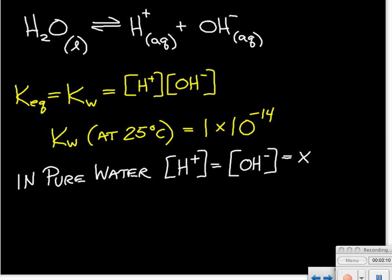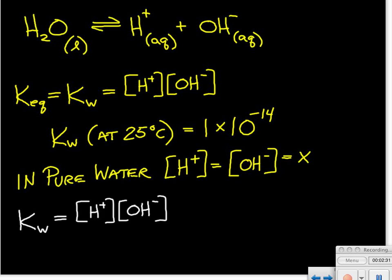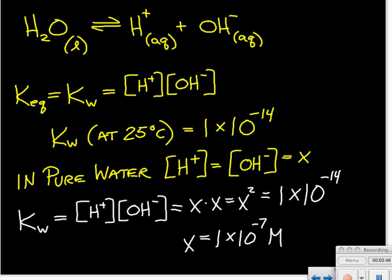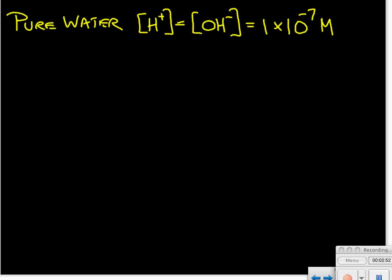If we look at our balanced equation, we note that if we have pure water, the only source of hydrogen ions and hydroxide ions is the water. So for every one water molecule that dissociates, we get one hydrogen ion and one hydroxide ion, so their concentrations must equal each other. Plugging that into our K sub W expression, the hydrogen ion concentration times the hydroxide ion concentration equals x times x, or x squared, equal to 1 times 10 to the minus 14. Solving for x, that is 1 times 10 to the minus 7 molar. So in pure water, the concentration of the hydrogen ion equals the concentration of the hydroxide ion, which equals 1 times 10 to the minus 7 molar.